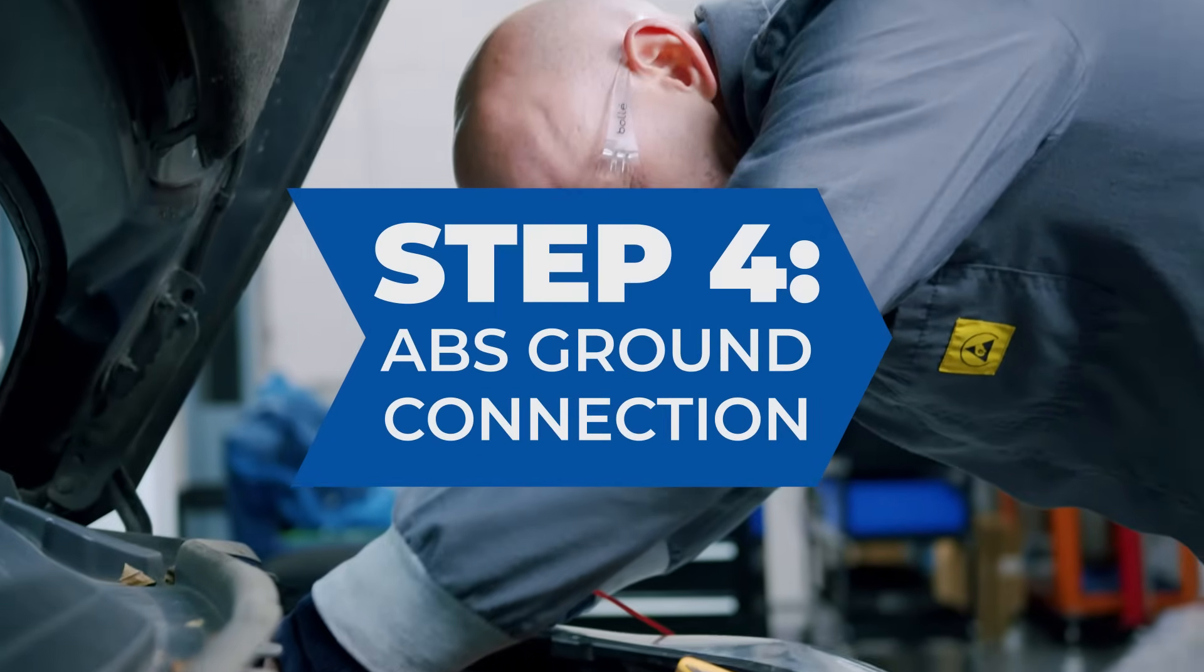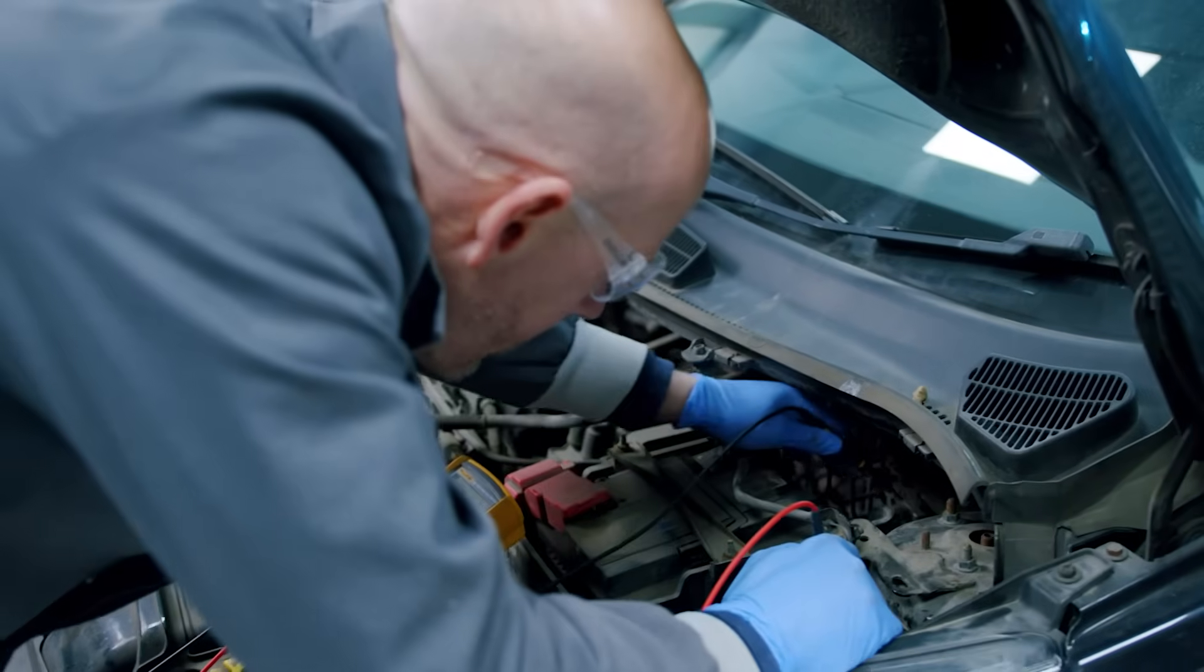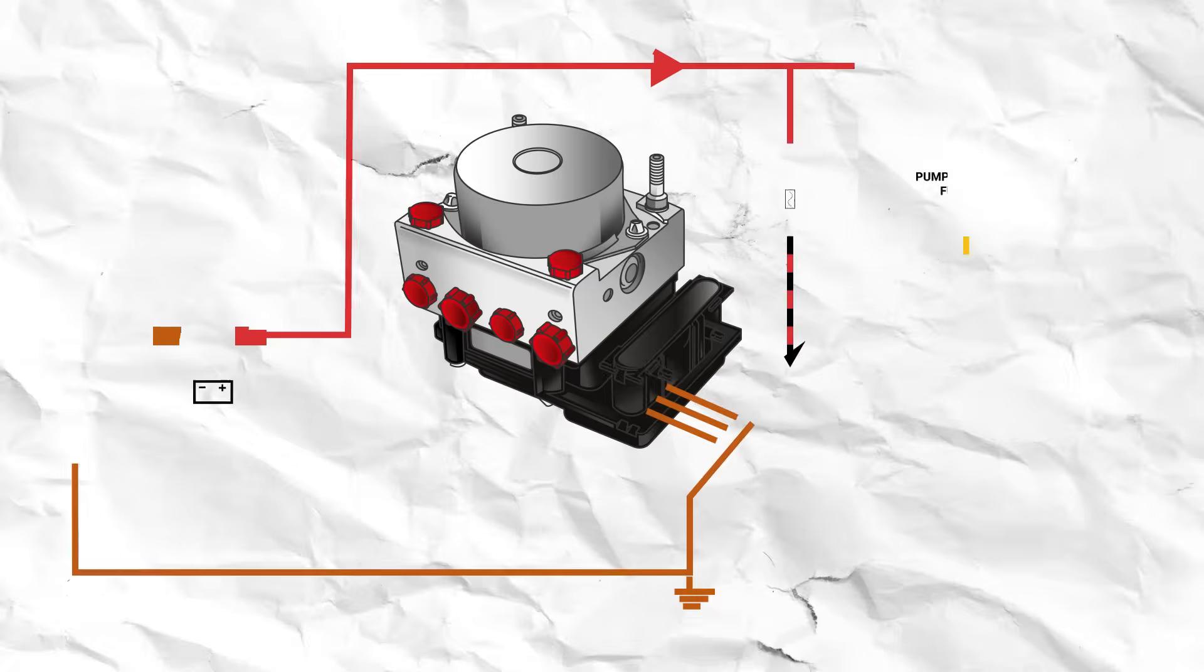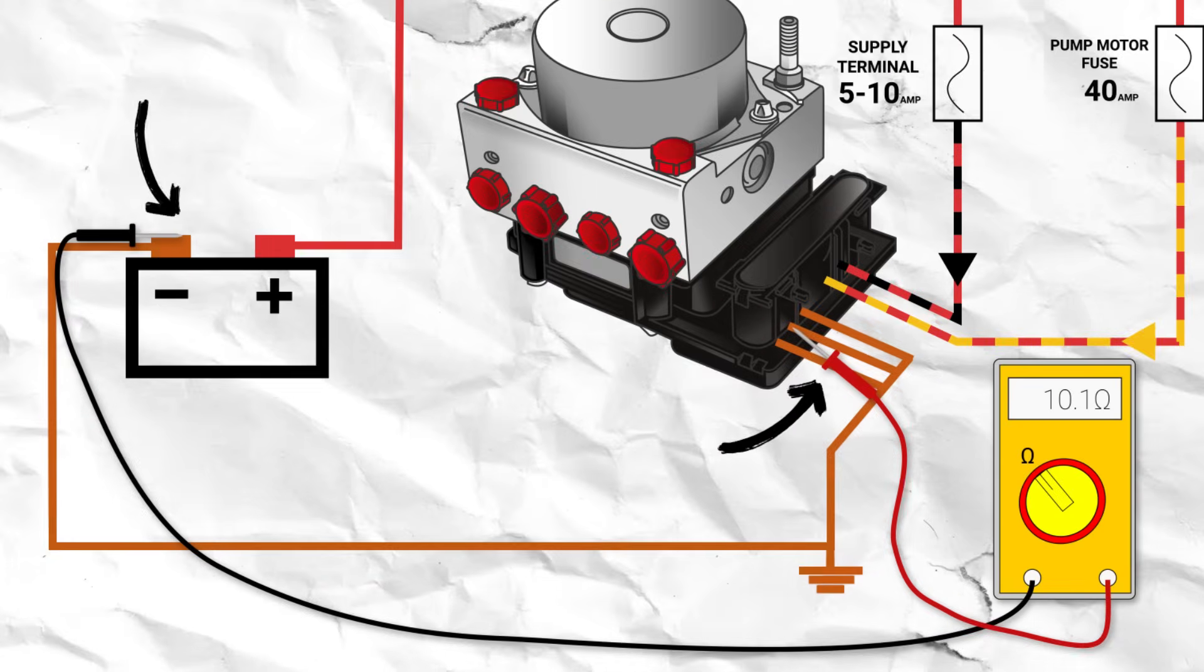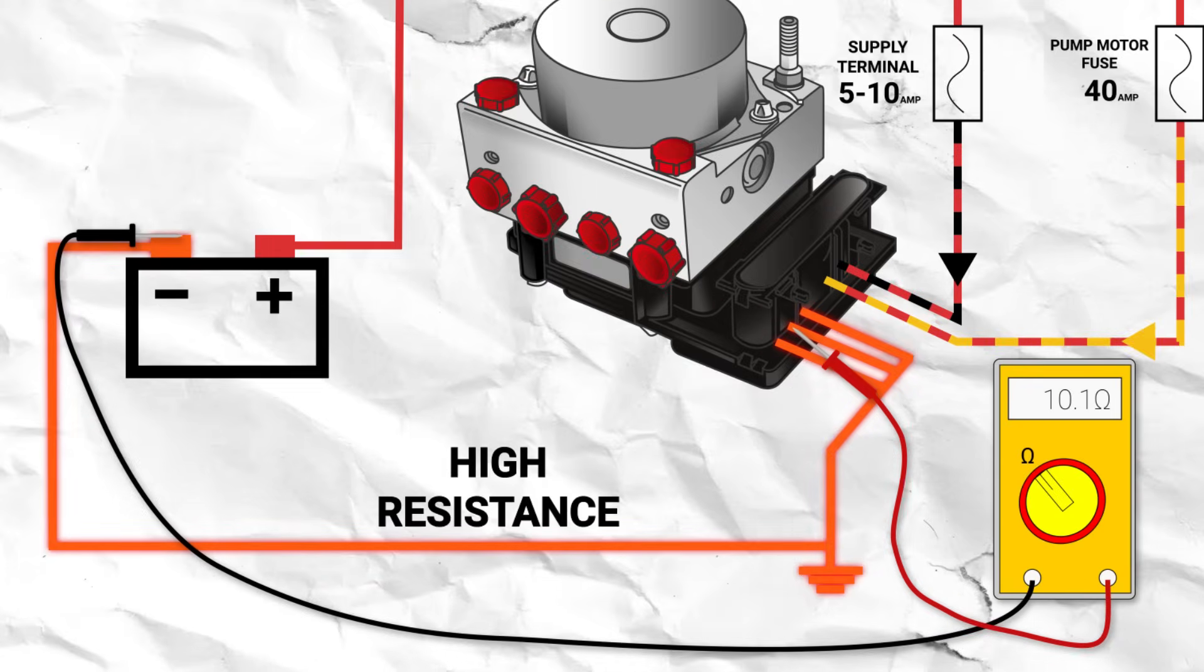Whilst we are talking about supply, we shouldn't forget the ground connection at the ABS. To test this, check the continuity between the earth terminal at the ABS and the negative side of the battery. If high resistance is present, then there could be a similar fault with the loom.